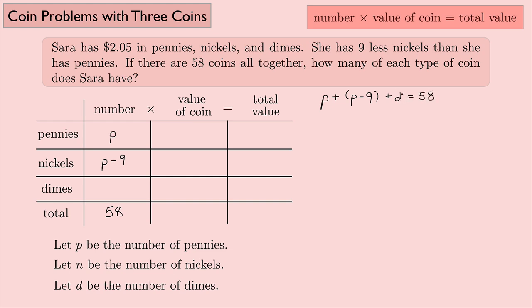So I can solve this for D. I can collect these. This is 2P minus 9 plus D equals 58. Then I can add 9 to both sides. If I add 9 to both sides, I get 2P plus D is 58 plus 9, which is 67. And so dimes must be 67 minus 2P.